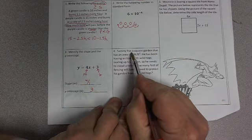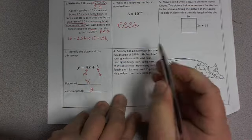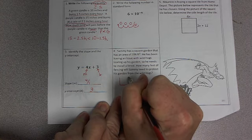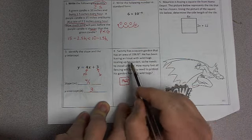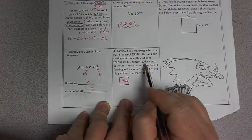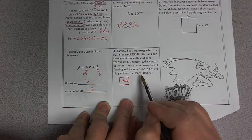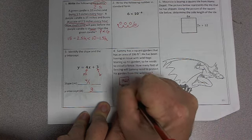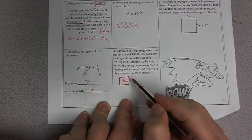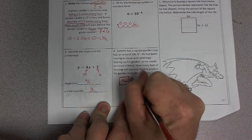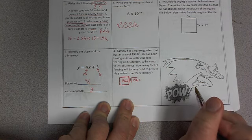Number 4. Sammy has a square garden that has an area of 196 feet squared. So we have a square garden. It helps to draw a picture. The area is 196 feet squared. He has been having an issue with wild hogs tearing up his garden, so he needs to install a fence. How many feet of fencing will Sammy need to protect his garden from the wild hogs? So we need to find the perimeter of the square, because he wants to put fencing around the entire square. So in order to find the perimeter, we need to find the side length of the square. To find the side length of the square when you're given the area, you just take the square root of the area.